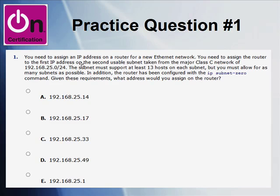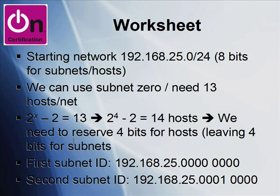This question says, you need to assign an IP address on a router for a new Ethernet network. That's our problem statement. You need to assign the router to the first IP address on the second usable subnet. The second subnet, not the first. The second usable subnet taken from the major Class C network of 192.168.25.0/24. Here's more detail. The subnet must support at least 13 hosts on each net, and we have to allow for as many nets as possible. And then here's some more knowledge. The router has been configured with IP subnet zero. Given these requirements, what address would you assign to the router?